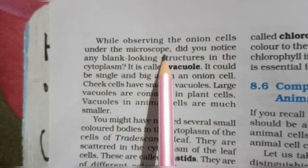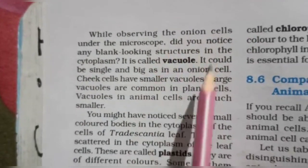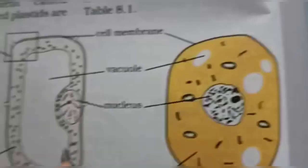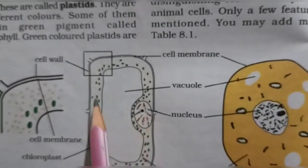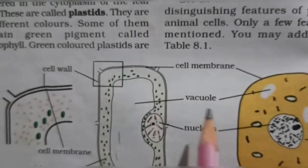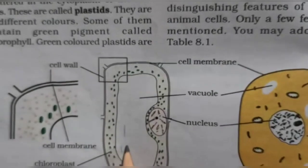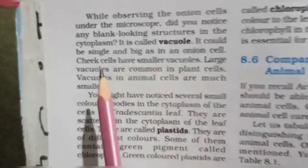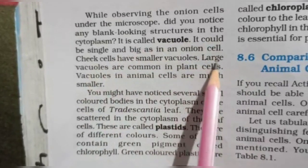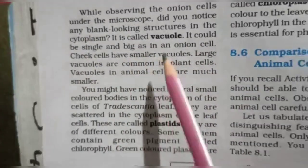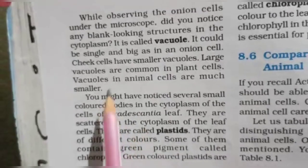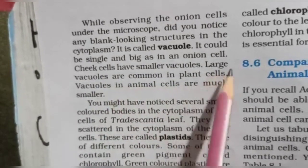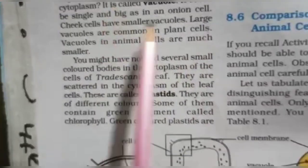While observing onion cells under the microscope, you may notice dark-colored structures in the cytoplasm — these are called vacuoles. Vacuoles can be single and large, as in an onion cell. Animal cells have smaller and more numerous vacuoles. Large vacuoles are common in plant cells, while vacuoles in animal cells are much smaller.